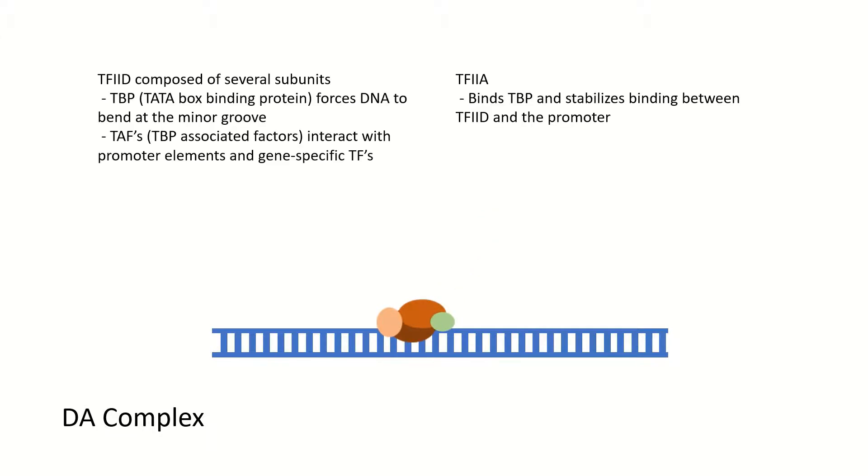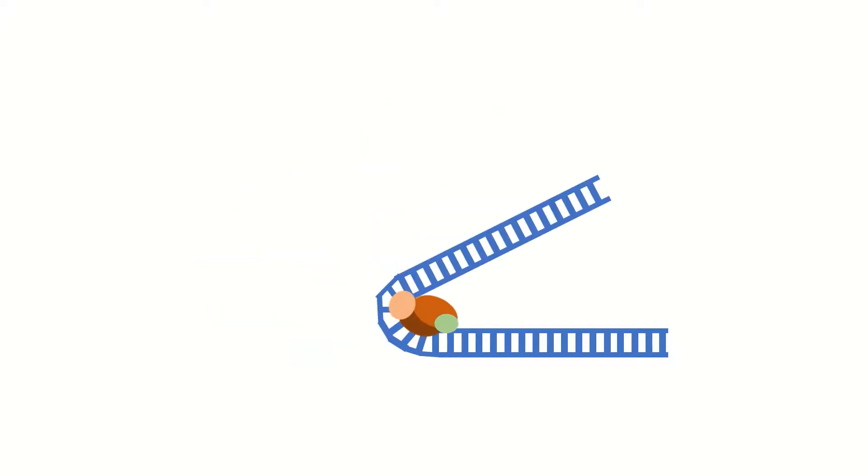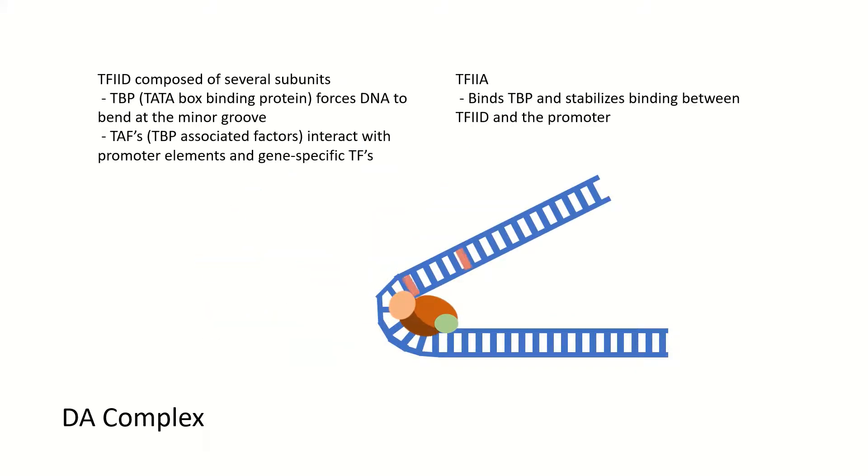Formation of the pre-initiation complex begins when TF2D and TF2A form the DA complex on the promoter. TF2D consists of a TATA box binding protein TBP and 8-14 TBP associated factors or TAFs. TBP binds the gene promoter at the TATA box, forcing the DNA to bend at the minor groove. The TAFs interact with other promoter elements as well as gene-specific transcription factors. TF2A binds to TBP and stabilizes the binding between TF2D and the promoter.